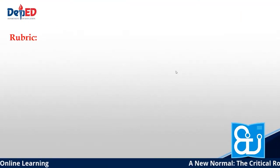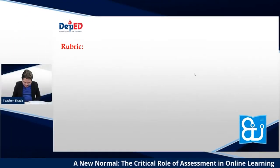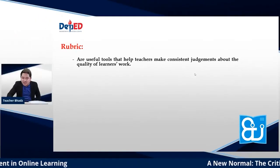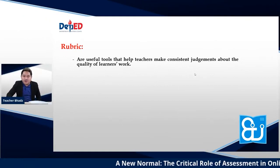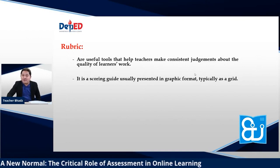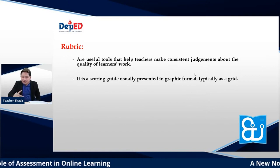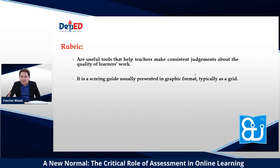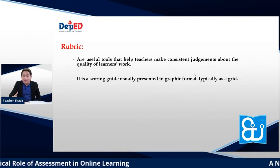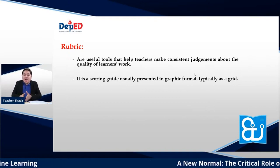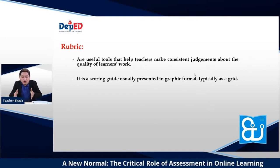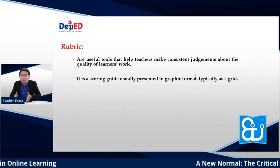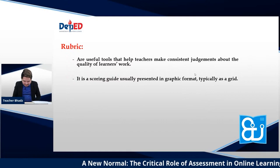Why do we need to use rubrics? We use rubrics as useful tools that help teachers make consistent judgments about the quality of learners' work. A rubric is a scoring guide usually presented in a graphic format—typically as a grid. This rubric helps us assess our learners objectively, following a given set of criteria and indicators anchored on the activity or output we want. Just like any other assessment, the rubric is not one-size-fits-all. You need to develop a rubric for whatever you want to assess and for whatever performance you want to assign, so we can truly see the output of our learners.